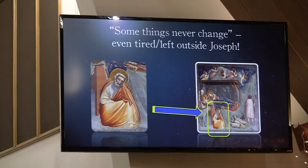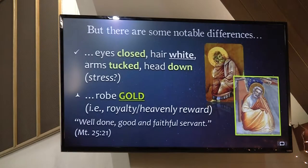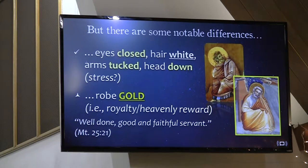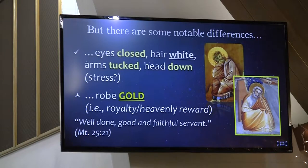So you've even got Joseph — tired Joseph — outside of the manger scene, doing what he did last week with his head on his hand. And yet, while some things never change, there are notable differences between what Giotto paints 30 years later and what Guido had painted in the Byzantine era. We begin with Joseph. While Giotto depicts Joseph similarly to Guido, Joseph's eyes here are closed — not open, not looking back at Jesus. He's looking down. His hair, instead of being nice and brown and healthy, is white. And his arms are tucked into his cloak rather than comfortably laying in his lap.